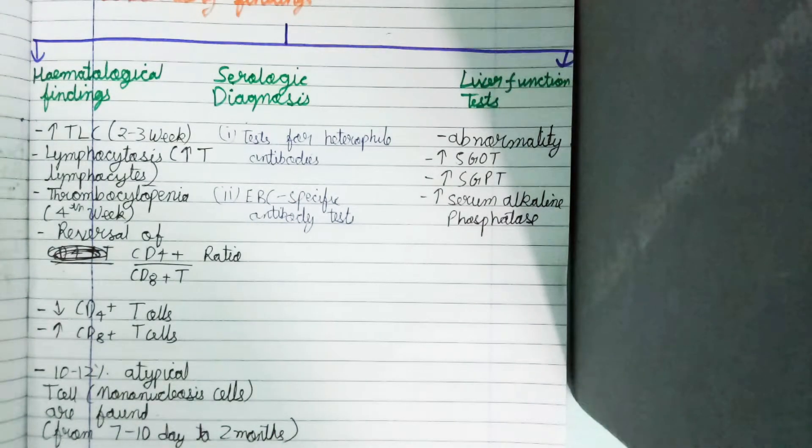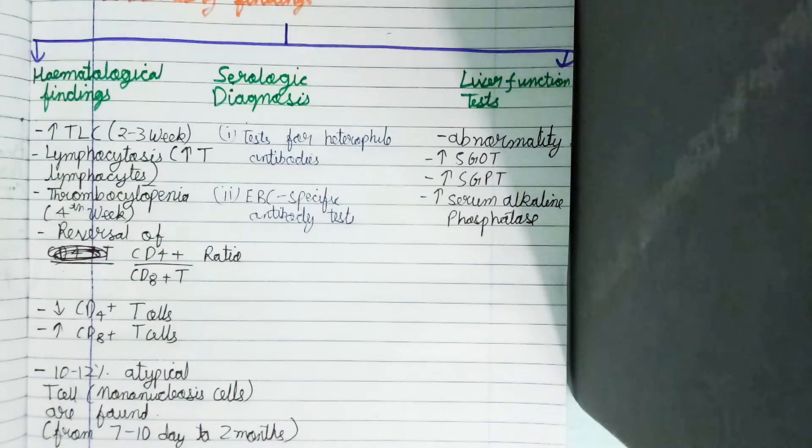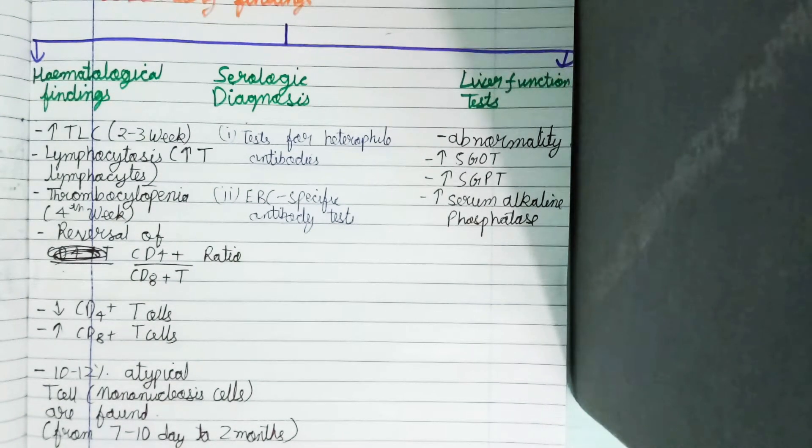Now we come to serological diagnosis. It includes two tests: test for heterophile antibodies and EBV-specific antibodies test. The names of these two tests are important.